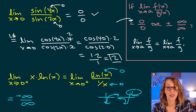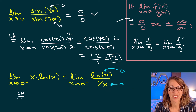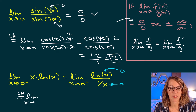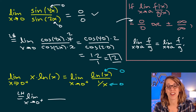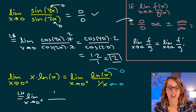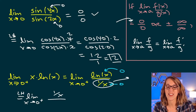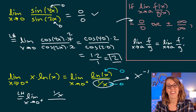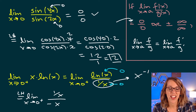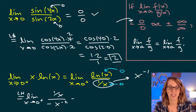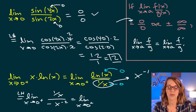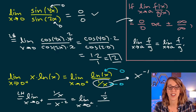Applying L'Hôpital's rule, I keep the limit as X approaches 0 from the right and take the derivatives of numerator and denominator separately. The derivative of the natural log is 1 over X. For the denominator, I think of 1 over X as X to the negative 1 and apply the power rule, giving negative X to the negative 2. I then write the denominator as negative 1 over X squared.